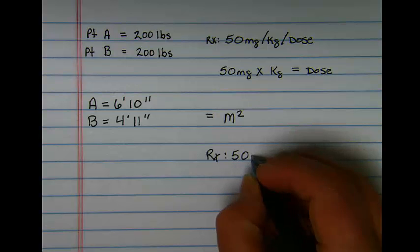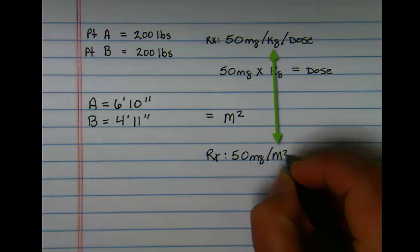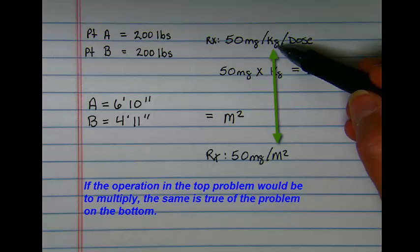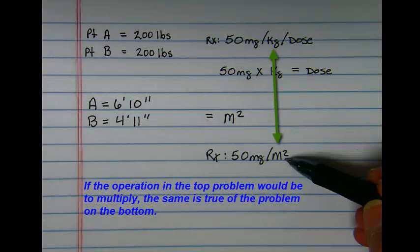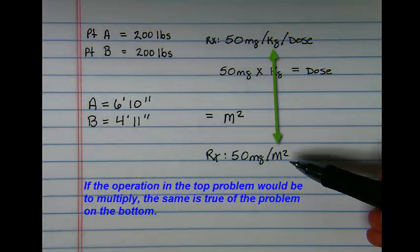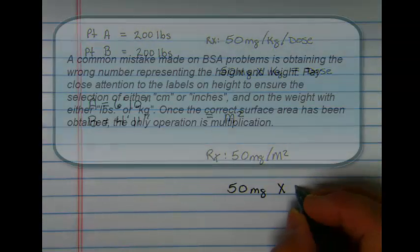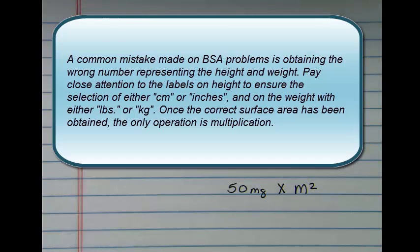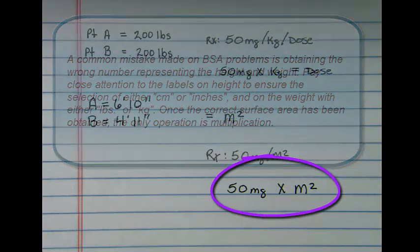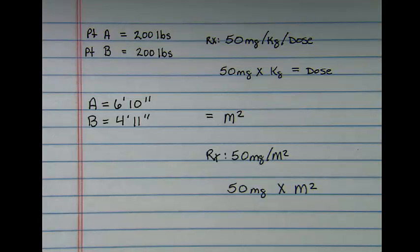So when you have a question that reads 50 milligrams per meter squared, simply replace where you would normally use kilograms with the number representing your height and weight. The operation is the same—you multiply the number you get off the body surface area chart as your meter squared number rather than a kilogram weight. I hope that clears that up a little.